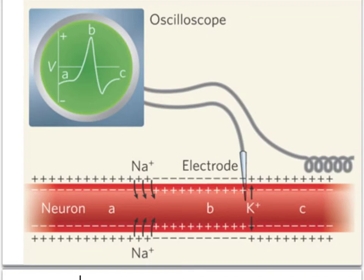When it reaches a high point, that's where the potassium ions flow back out of the cell to repolarize the cell membrane. And that's what we see at point B — the potassium channels opening and the potassium ions flowing into the cell, repolarizing things.